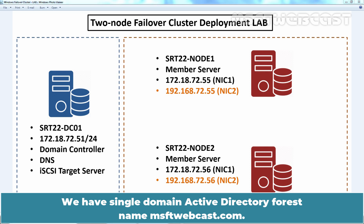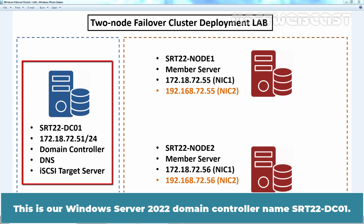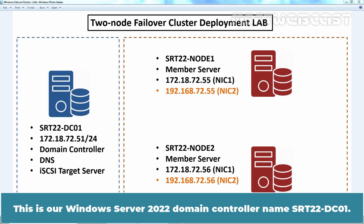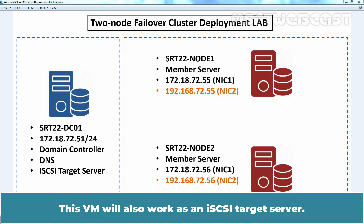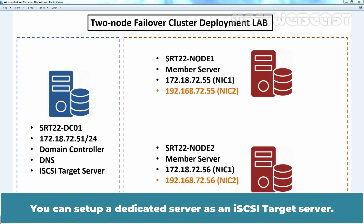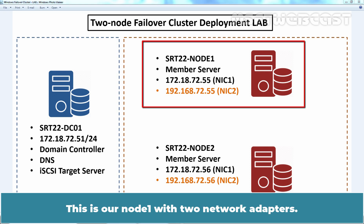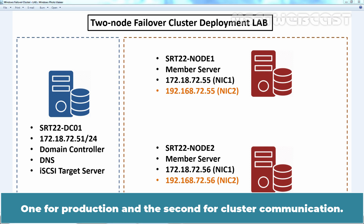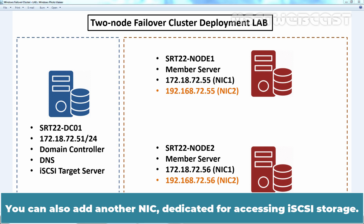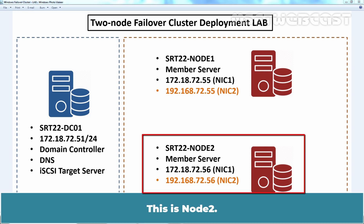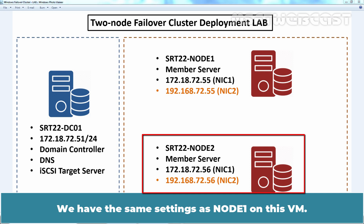We have a single domain Active Directory forest named MSFTwebcast.com. This is our Windows Server 2022 domain controller named srt22-dc01. This VM will also work as an iSCSI target server. You can set up a dedicated server as an iSCSI target server. This is our Node 1 with two network adapters — one for production and the second for cluster communication. You can also add another NIC dedicated for accessing iSCSI storage. This is Node 2, which has the same settings as Node 1.